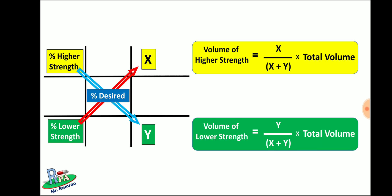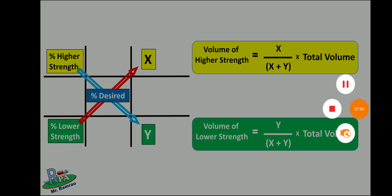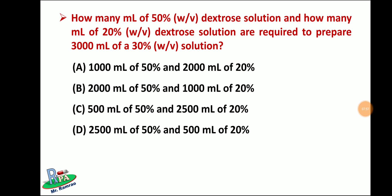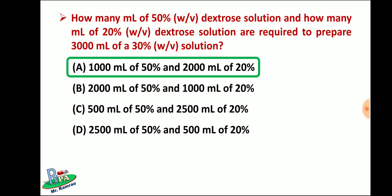So the correct option for the question we were solving is the first option — 1000 ml of 50% and 2000 ml of 20% dextrose solution.